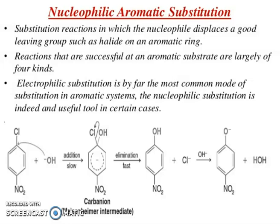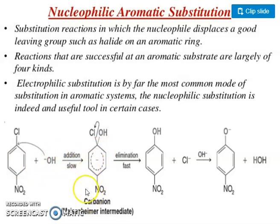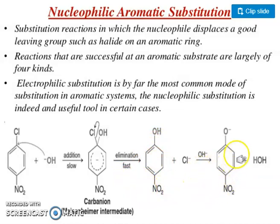Now I will give you one example here. This is 4-nitrochlorobenzene. The nitro group — an electron withdrawing group — is present at the para position. When OH⁻ attacks, addition is slow. This leads to the formation of a carbanion, which is resonance stabilized — the Meisenheimer intermediate.